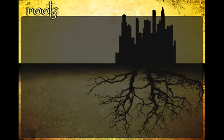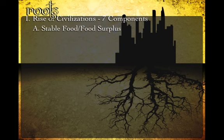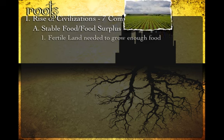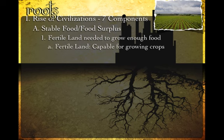As we talk about a civilization, it's important to understand what a civilization is. The best way of doing that is to understand the seven components behind what causes civilizations to rise. The first is a stable food supply, and more importantly, food surplus. In order to do this, you must have fertile land — land that is capable of growing crops.